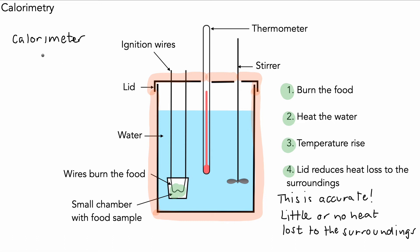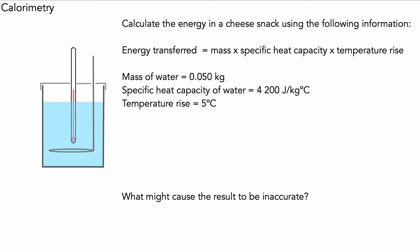Now let's see what questions might look like in the exam. Here is a fairly straightforward one using the simpler calorimeter. The question is asking us to calculate the energy in a cheese snack using the following information. We can use the equation that's here on the screen. This would likely be given to you in the exam because it's not mentioned in the specification.